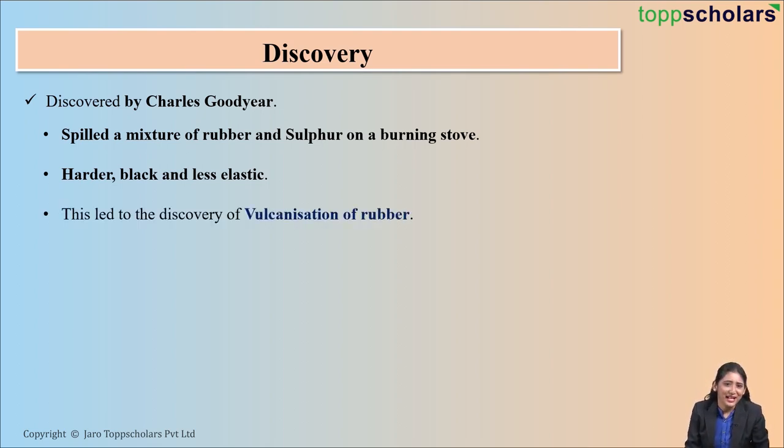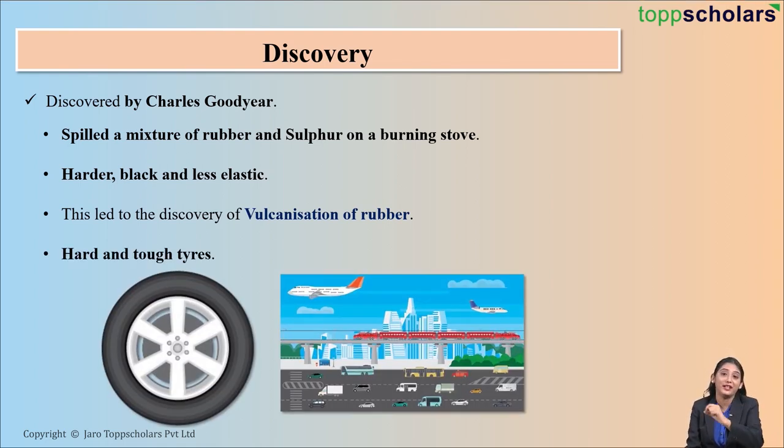This black and hard rubber was now used for making hard and tough tires, which eventually led to a revolutionary change in transportation.